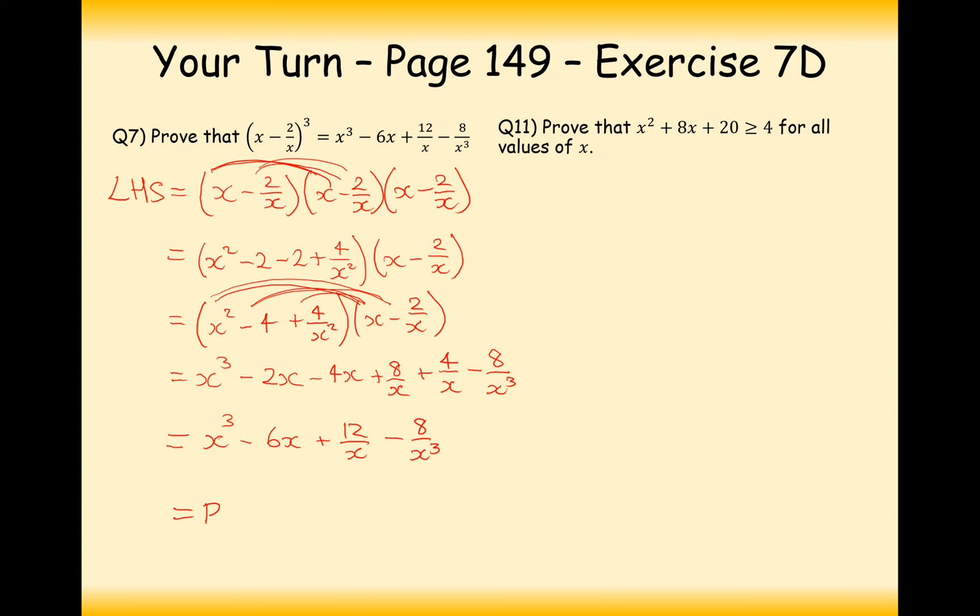So simplifying this, we're going to get x cubed minus 6x plus 12 over x minus 8 over x cubed. Perfect. Which is exactly what we want on the right-hand side. So once we've done that and we've proved that we can put a little square at the bottom of our working.